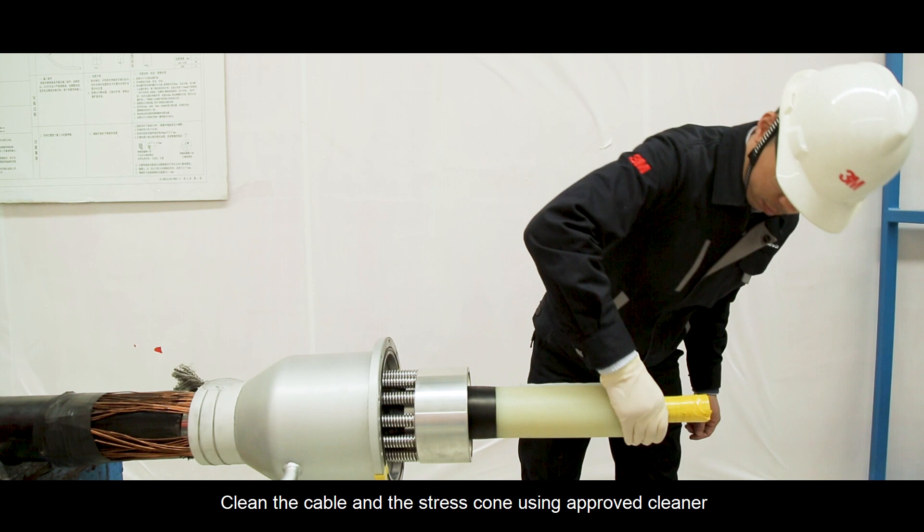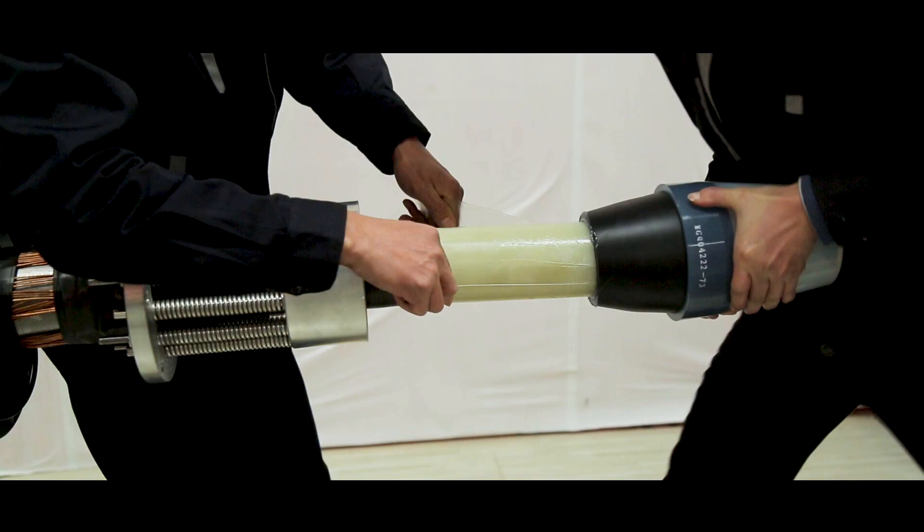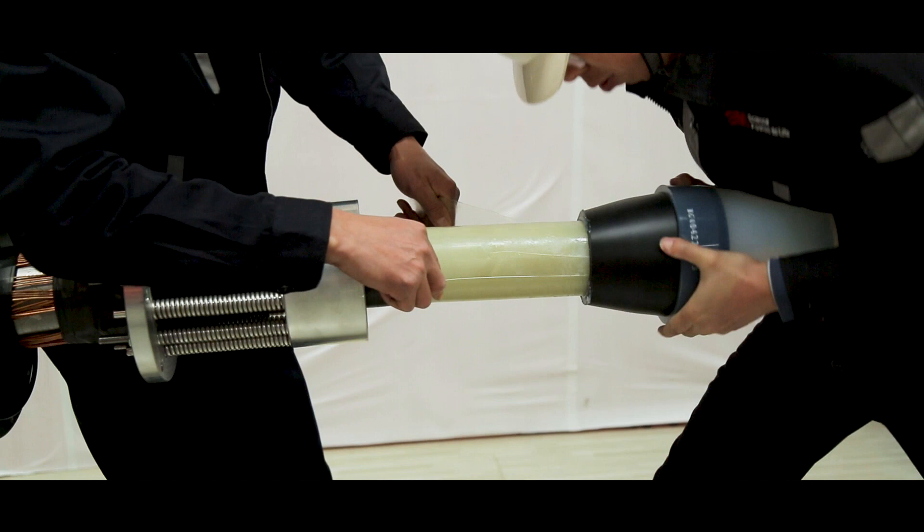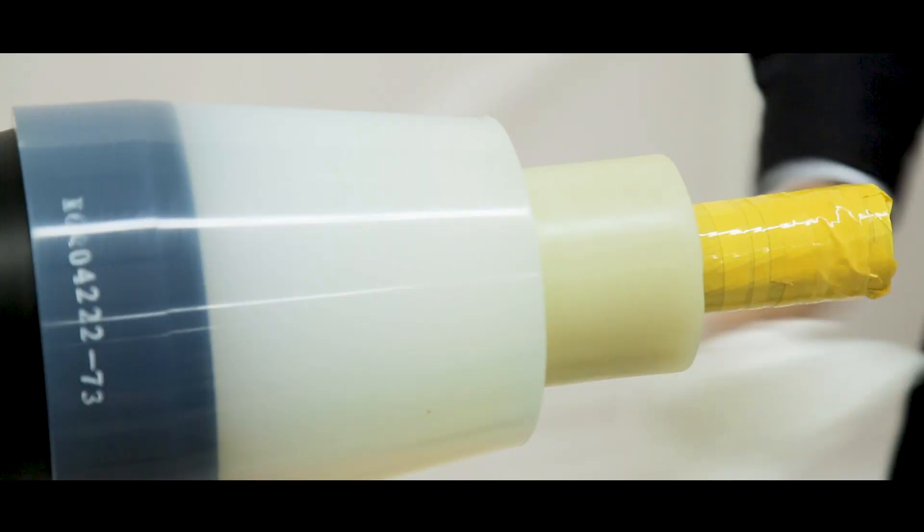Clean the cable and the stress cone using approved cleaner. Apply silicone grease on the insulation and the bore of the stress cone. Slide the stress cone onto the cable and stop at the mark. Remove the excess grease and clean the cable and stress cone.